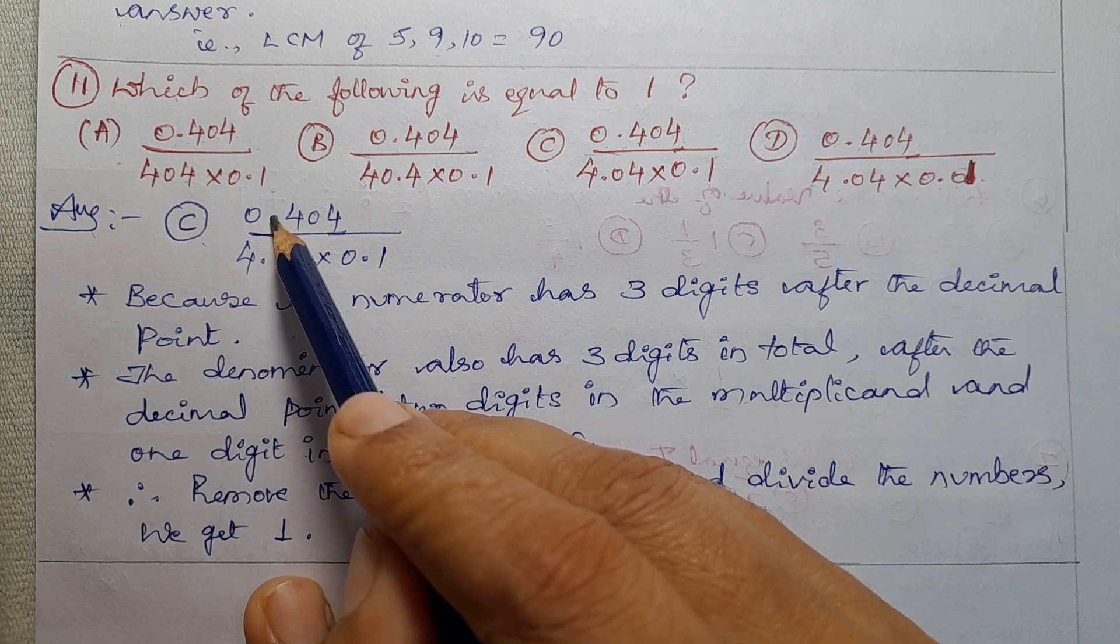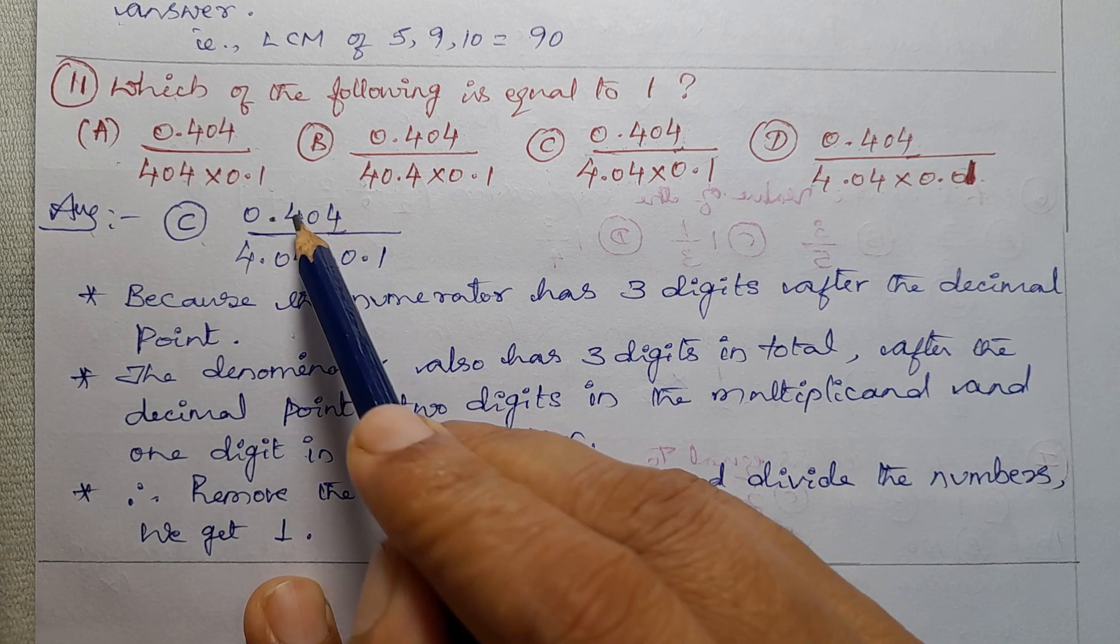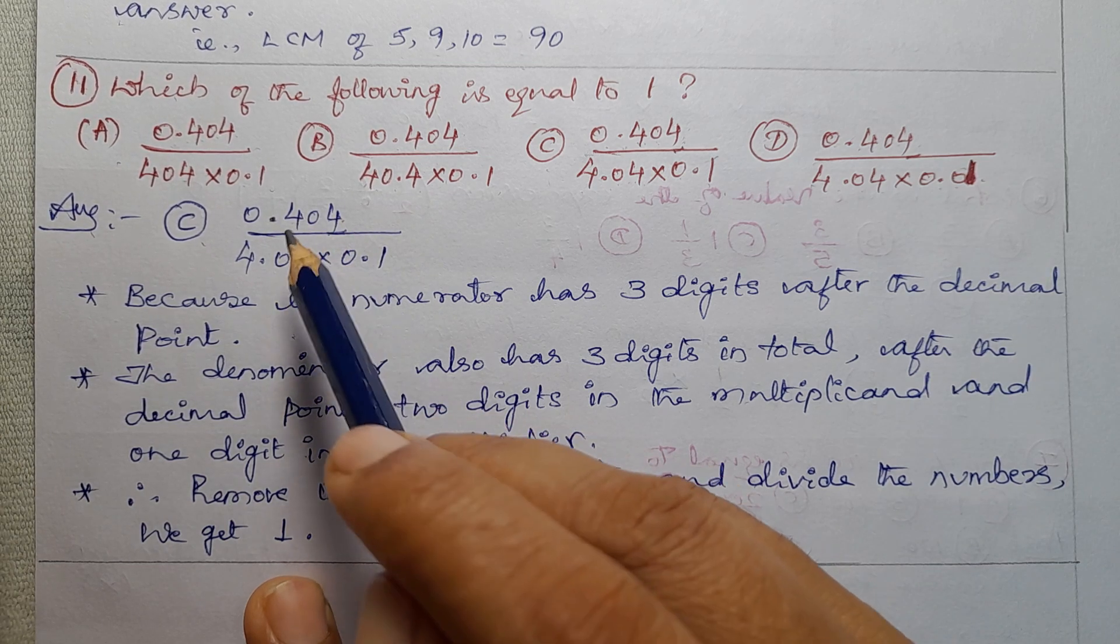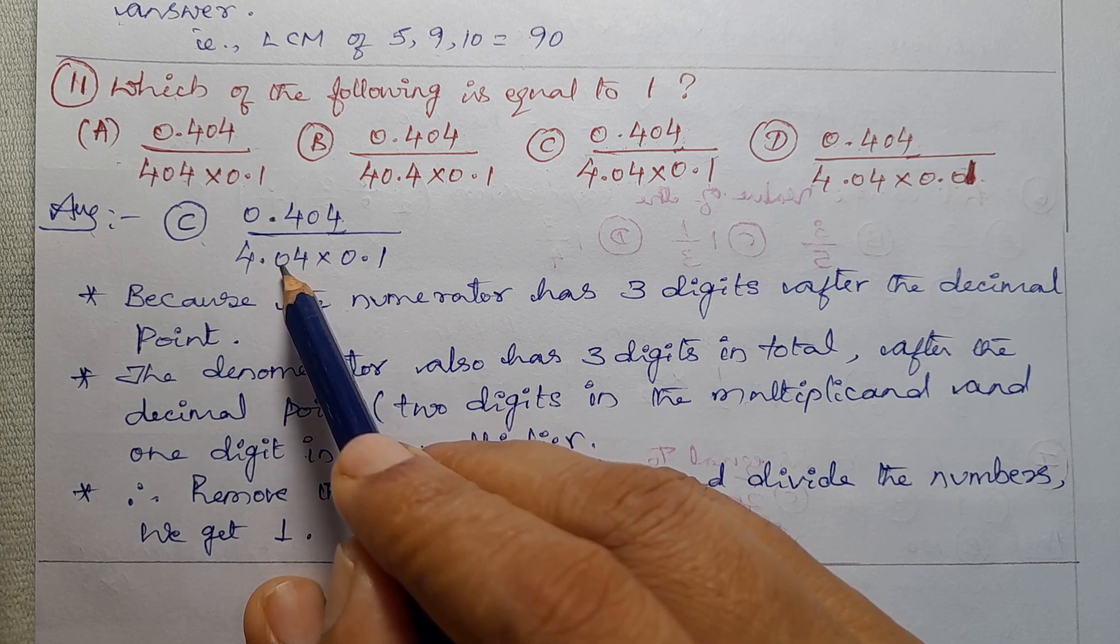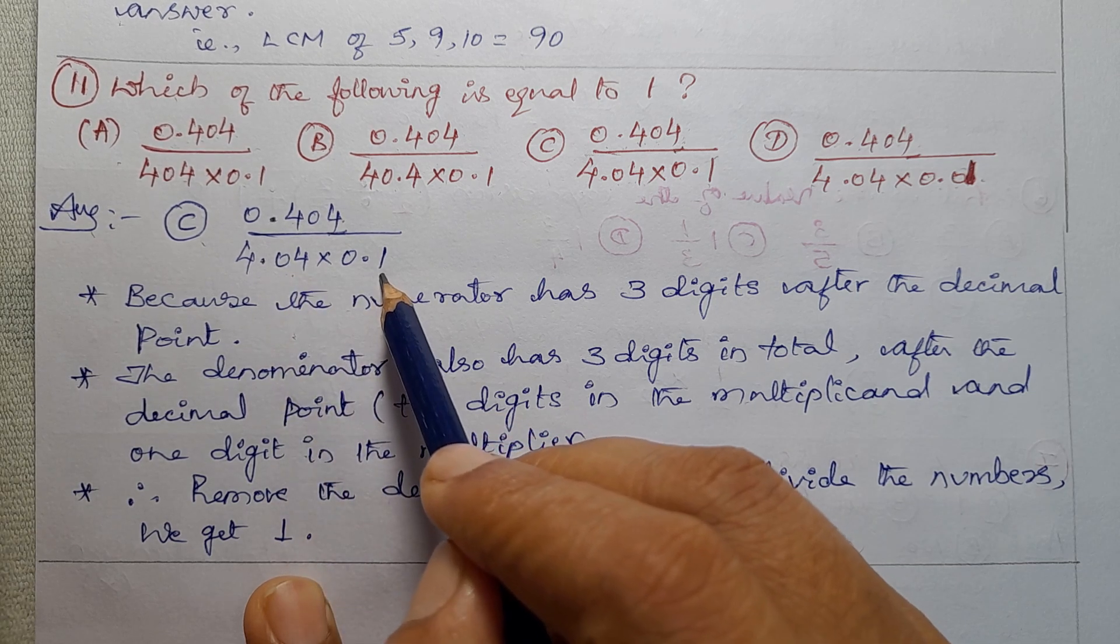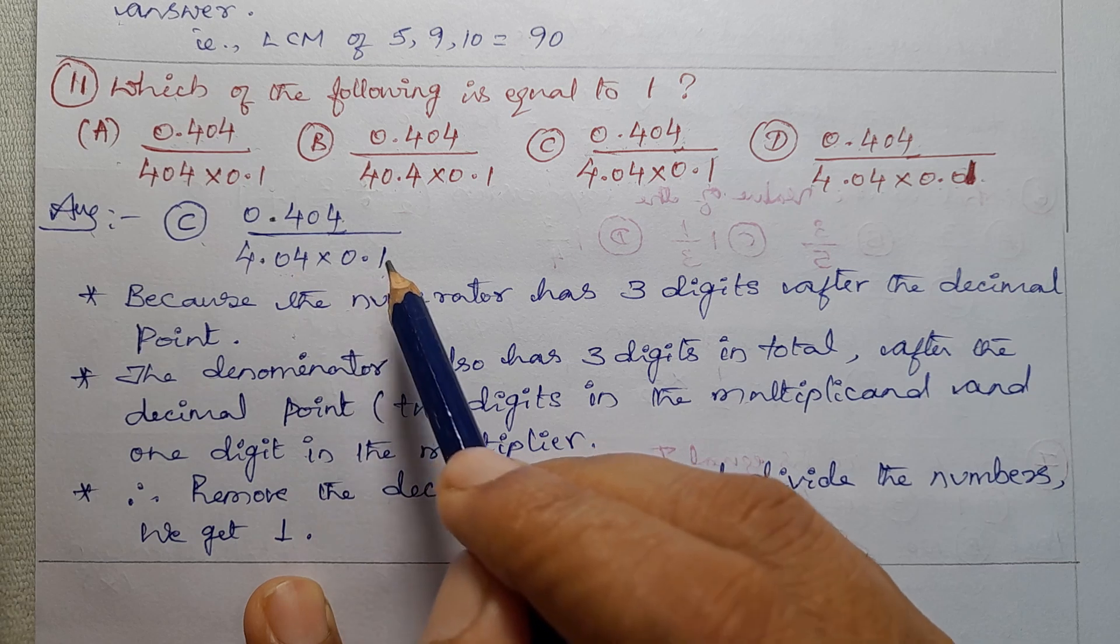Because the numerator has 3 digits after the decimal point. See here, after the decimal point, how many digits are there? 3 digits. In the denominator, after the decimal point, here 2 digits, here single digit. 2 plus 1 is 3.